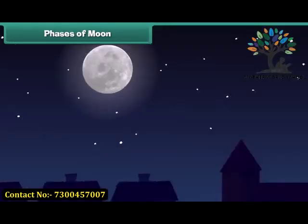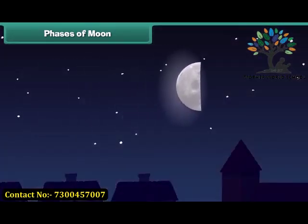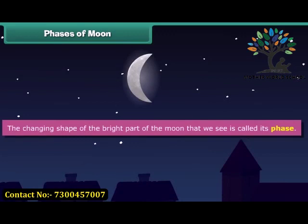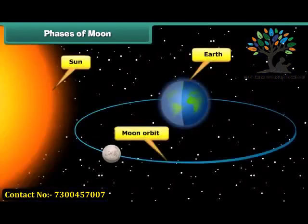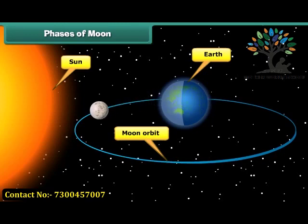You must have noticed that the moon does not always appear as a perfect circle. That is because it goes through phases. The changing shape of the bright part of the moon that we see is called its phase. Sunlight strikes the moon at different angles throughout its journey around the Earth. The part of the moon facing the Sun is lit, whereas the part facing away from the Sun is in darkness.